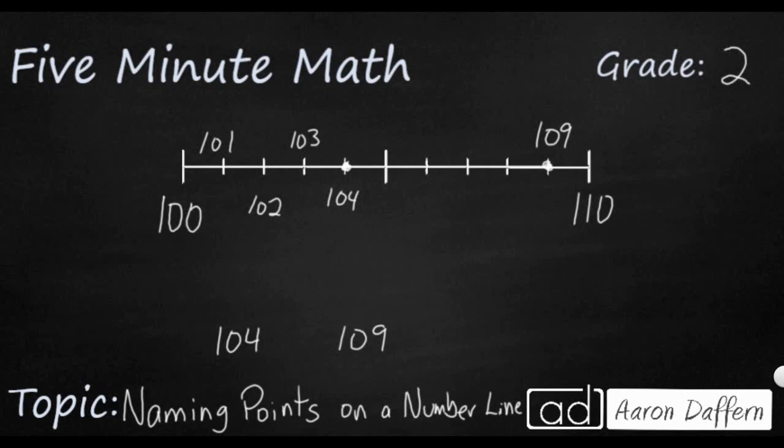Now just to double check, let's go ahead and fill out the rest of our number line. But you don't always have to start from the left side and count plus one. Sometimes you can start from the right and you can count minus one to find the numbers, and that's going to be 108, there's my 109.